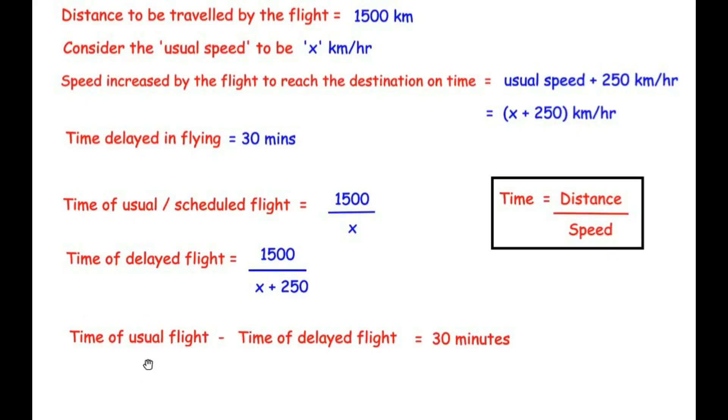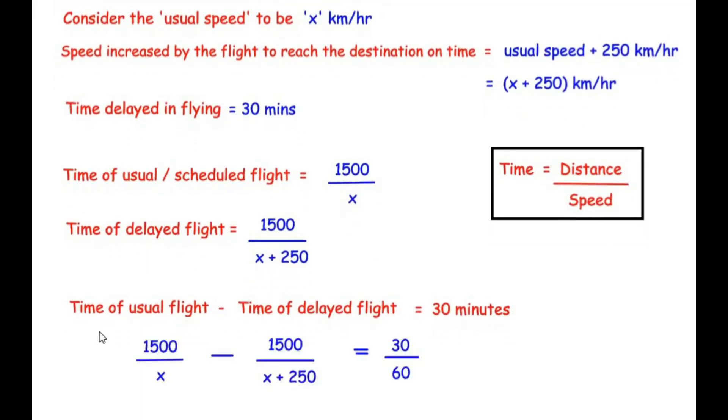So the next step is just substituting the values of the time for both the cases as we have got over here. So let me write here, time of usual flight is 1500 over x minus time of delayed flight is 1500 over x plus 250 is equal to, now the 30 minutes has been converted into hours since we took the speed in terms of kilometers per hour. So we are going to write the 30 minutes as 30 over 60 hour.